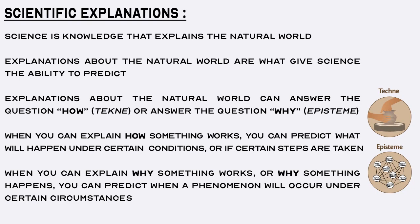Perhaps the most important aspect of science is that it explains the natural world, and these explanations give science the ability to predict. Explanations can answer the question how — what the Greeks refer to as techni — or they can answer the question why — what the Greeks refer to as epistemi. When you can explain how something works, you can predict what will happen under certain conditions. When you can explain why something happens, you can predict when a phenomenon will occur.